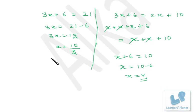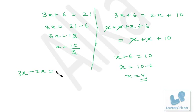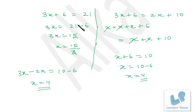What we're doing exactly is taking 2x to one side and 6 to the other side. So from 3x minus 2x we get x, and 6 goes to the other side as negative, giving x equals 4. This is the value of x that satisfies the equation.